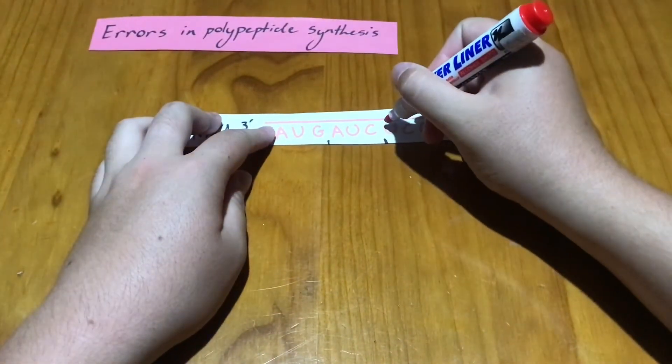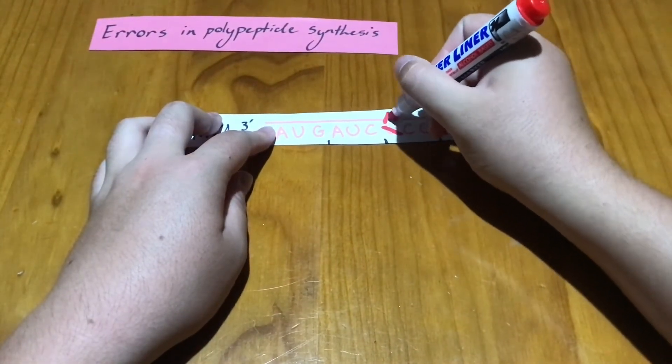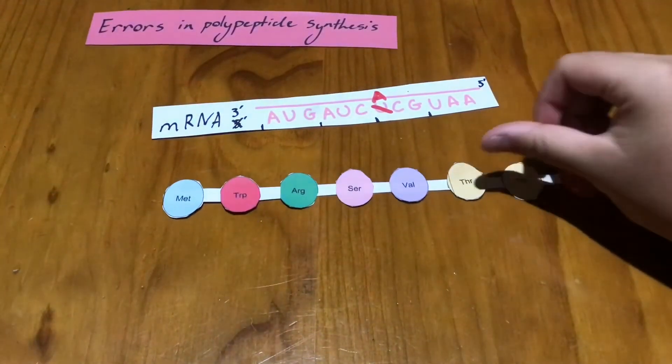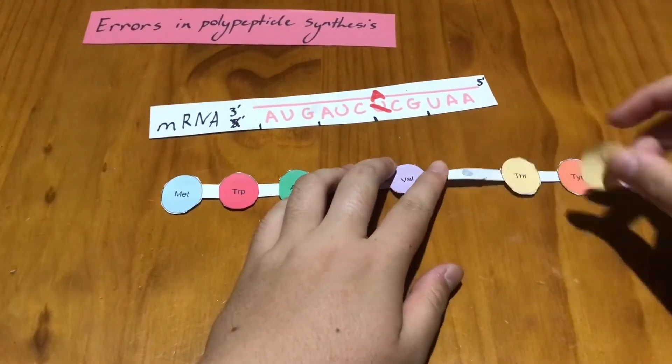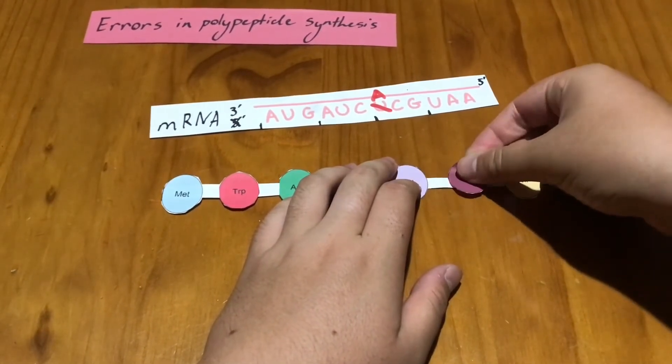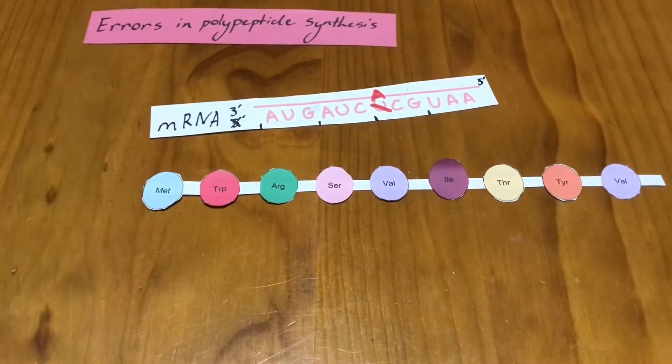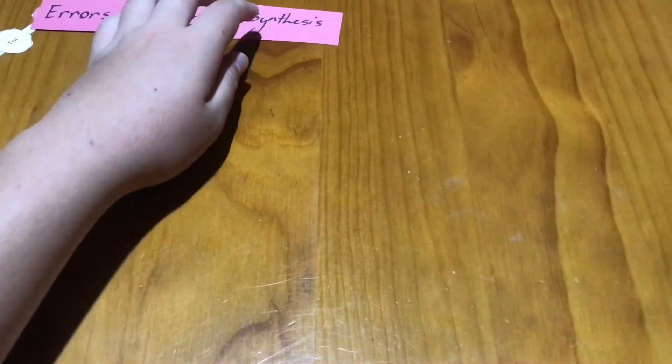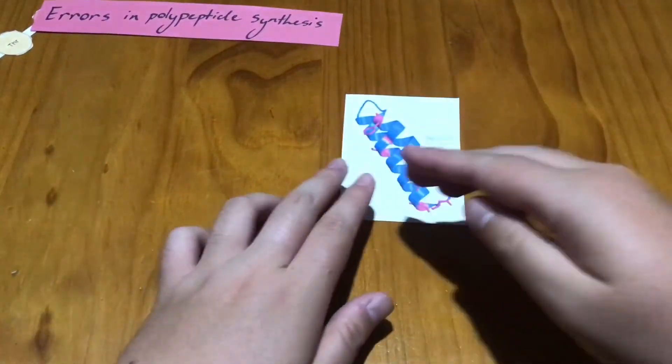Errors in polypeptide synthesis: A change or mutation in the code of DNA will cause changes in the mRNA, which may be a single letter and may not cause the wrong amino acid to be decoded, or it can code for an entirely different amino acid. This change in the polypeptide chain will cause the protein to be misshapen or not function as intended.